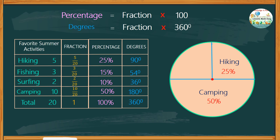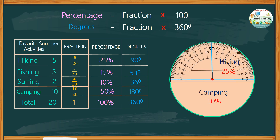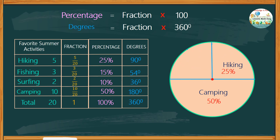Continue with the central angle for fishing, which makes 54 degrees. Again, take your protractor. This time we will create a sector on the left. Locate 0 degrees, then move up to 50, and an additional 4 degrees, then mark with a dot. Remove your protractor and draw a line to the center. This 54-degree angle makes up the portion for fishing, which is 15% of the circle. Therefore, the remaining sector is 36 degrees, which is the portion for surfing, making up 10%.